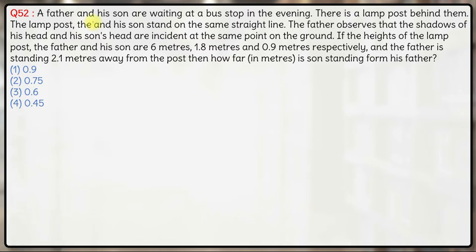It should be the father here. The lamp post, the father and his son stand on the same straight line, okay. So this is the ground, this is the lamp post here, this will be father somewhere standing here and this will be the son somewhere standing here.